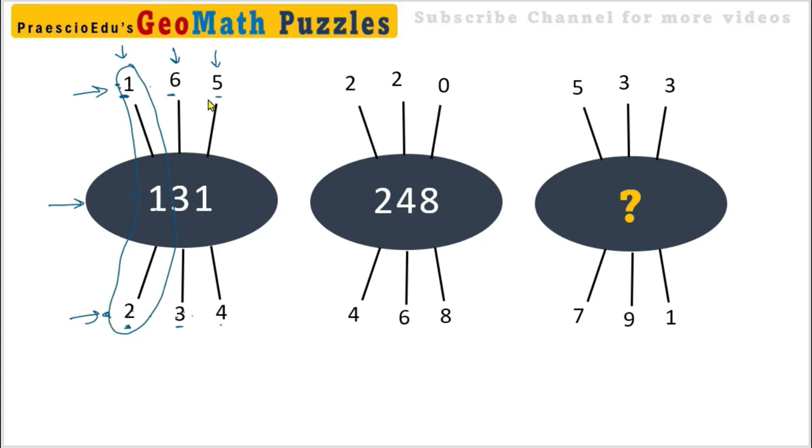So here six and three, the difference maintained at the middle is one. Like this, five and four - the difference is one. Two and four, difference is two. Here two and six, difference is four. Zero and eight, difference is eight.